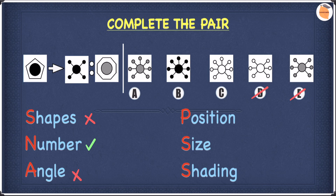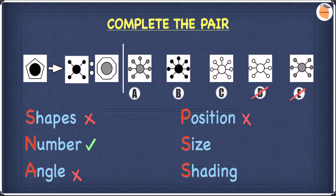Let's move on to position. In terms of position, they're all at random positions, so that won't really help us find the answer — cross next to position. Moving on to size: they're all different sizes, so that won't help us either, so let's cross it off. Let's move on to shading.